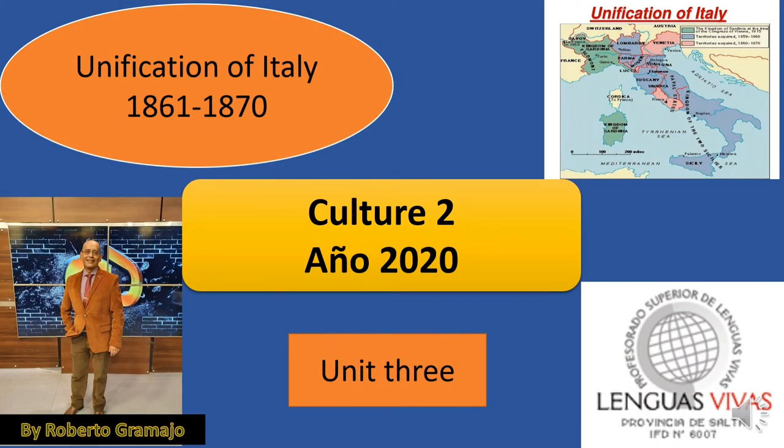Hello everybody. In this class we are going to deal with the unification of Italy, which occurred in two steps. The first step was in 1861 and the unification was finally achieved in 1870. This is part of the contents of unit number 3.